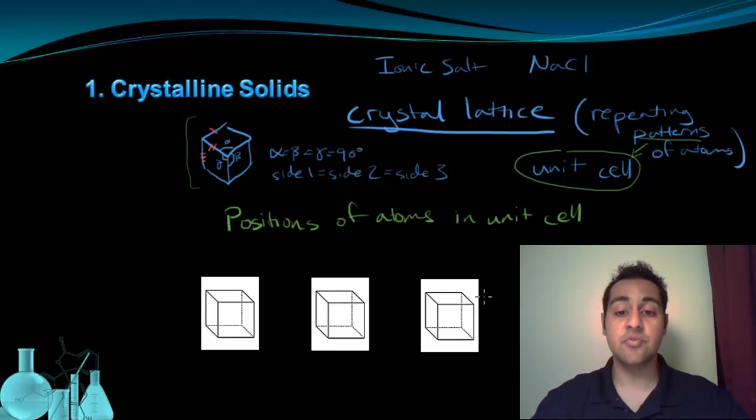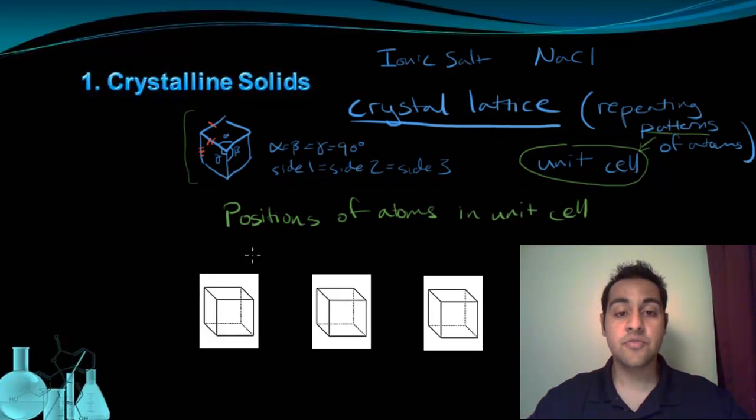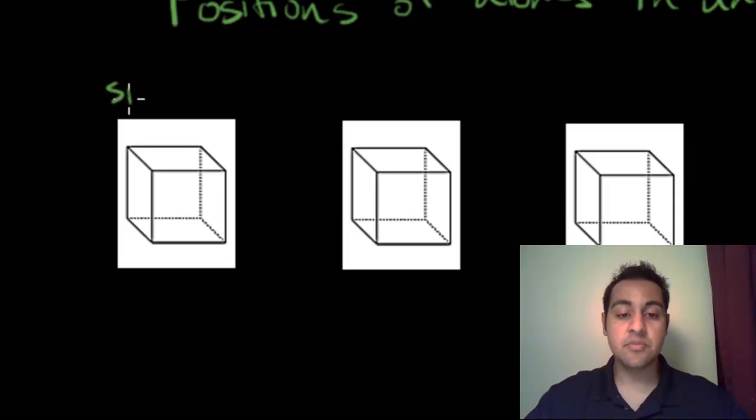So here are three representative cubes. And we're going to draw in the position of atoms to show the different possibilities that can exist. So the first possibility is just a simple cube. The first one we're just going to call simple. And in the simple case, the position of atoms, there's one at each corner of the cube. So there's an atom here, and there's an atom here, here, and here. So in this simple configuration, there's one atom in each corner of the unit cell cube.